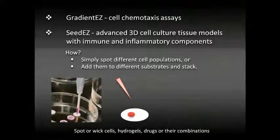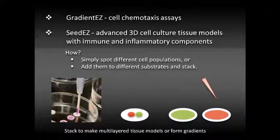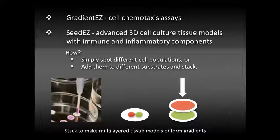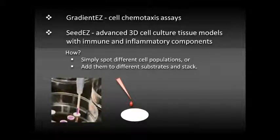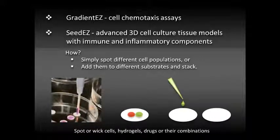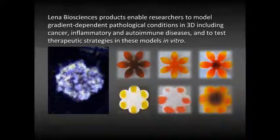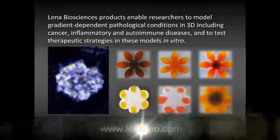SeedEasy and GradientEasy tools support cell migration assays and advanced 3D cell culture tissue models with immune and inflammatory components. Simply spot different cell populations or add them to different substrates and stack. Lena Biosciences tools enable researchers to model gradient-dependent pathological conditions in 3D, including cancer, inflammatory, and autoimmune diseases, and to test mono- and drug combination strategies in these models in vitro.